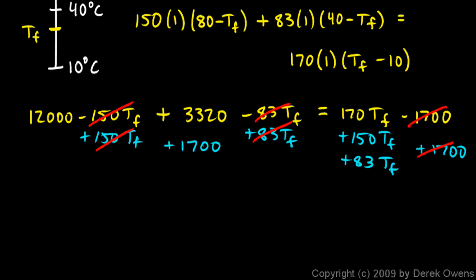Now all my TF's are on the right, and I have 170 plus 150 plus 83. That comes out to 403 TF. And on the left I have 12,000 plus 3320 plus 1700.